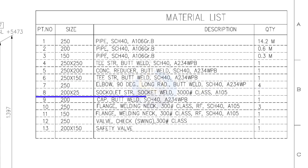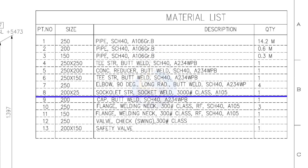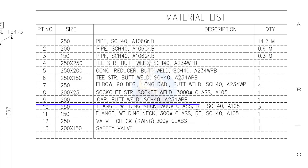Item number 8: 200 into 25 sokolet, socket welded, class 3000 pound, quantity 1. Item number 9: cap, butt welded, schedule 40, quantity 1.